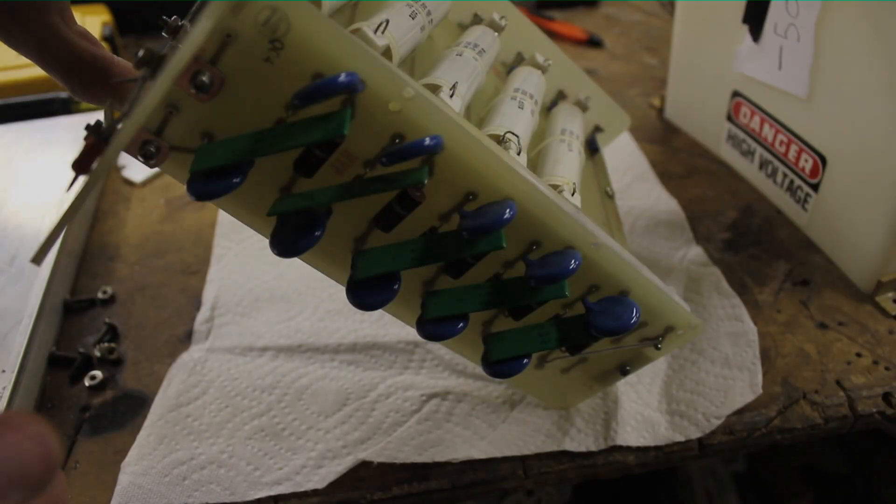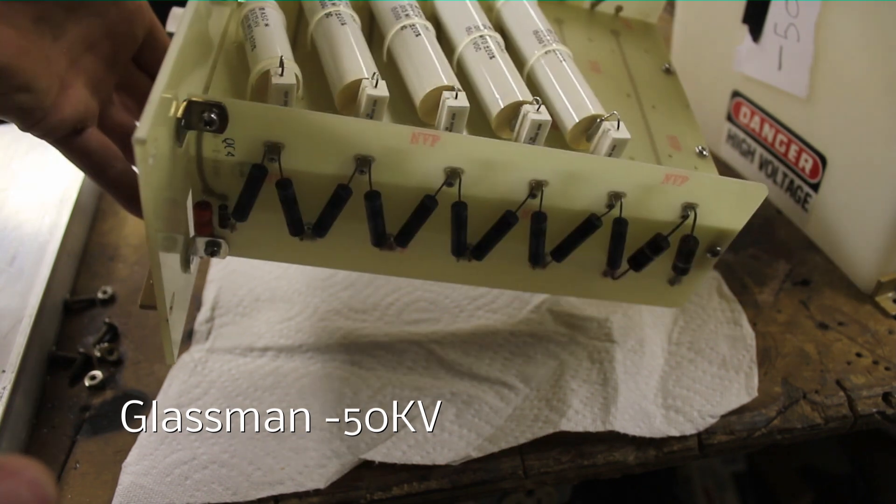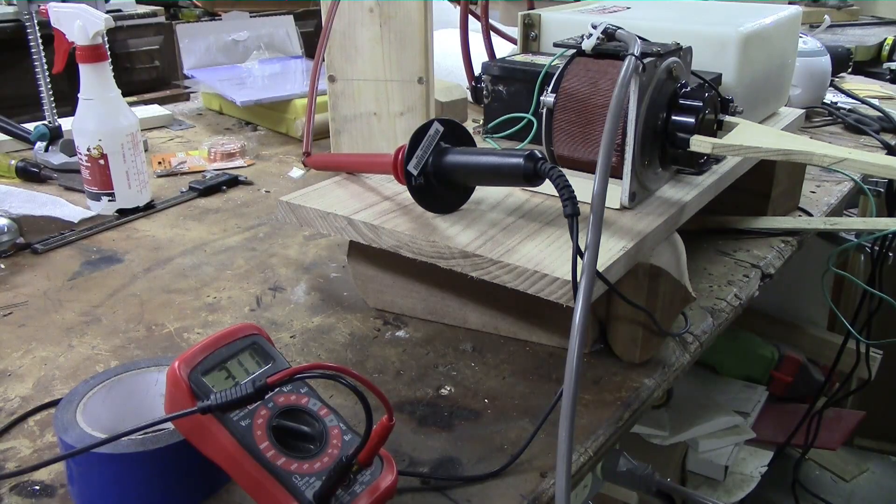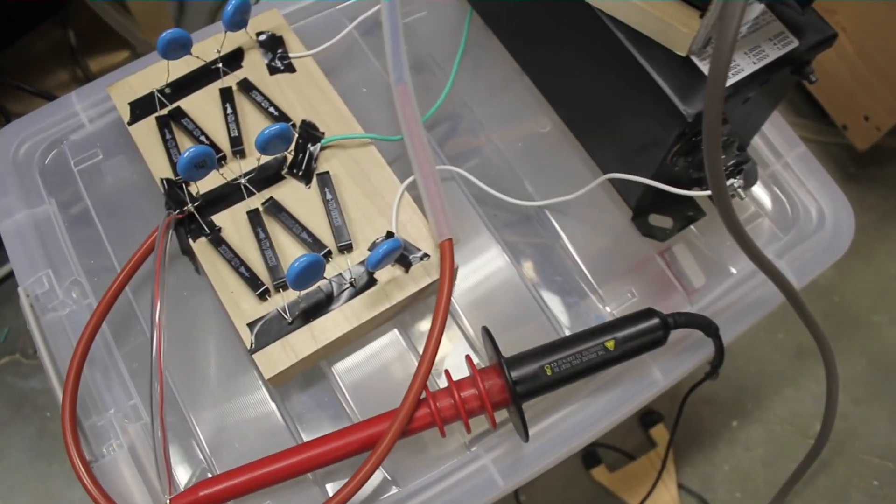Now we need a high voltage supply. I ended up just buying a Cockcroft Walton multiplier off eBay and hacking a neon sign transformer. There are a lot of ways to get 30 or 40,000 volts at like 10 milliamps.